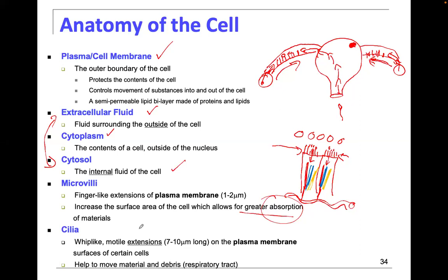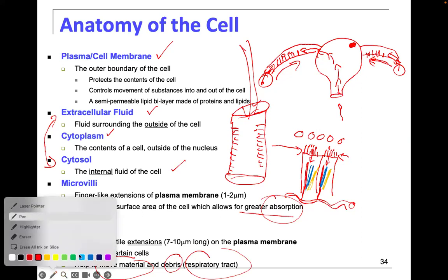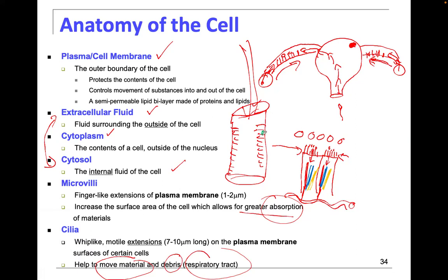Cilia are designed to move material and debris. We have them in the fallopian tubes and also in our respiratory tract. In the trachea, cilia line all of the respiratory tract. When you breathe in smoky, dusty air with foreign particles, goblet cells stuck between the columnar cells produce mucus that moves up and sticks to the top of the cilia.